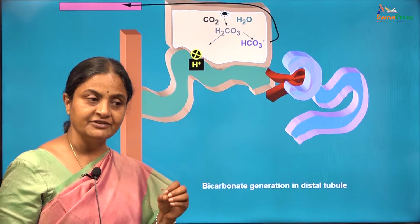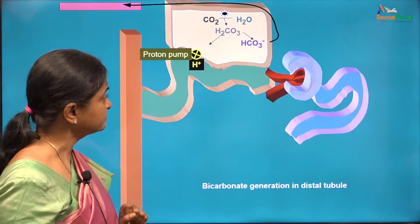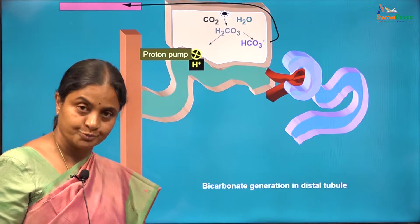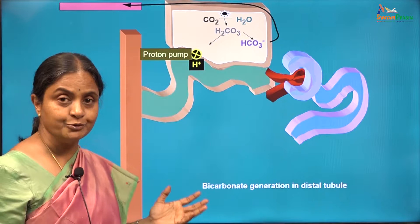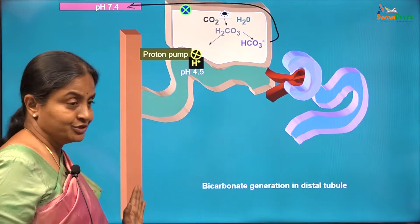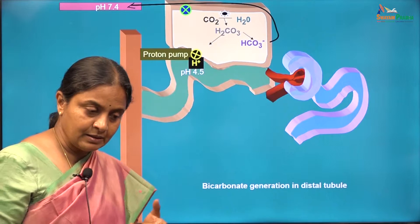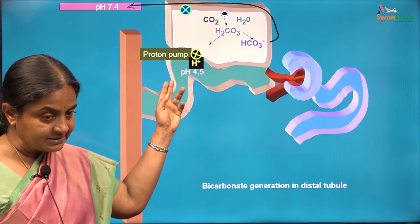The V-type ATPase — V for vesicular — is generally found on all vesicles within cells, but in the distal tubular cell it is found on the plasma membrane as well. This proton pump can push protons against a gradient; even if the luminal fluid becomes acidic, it can continue to push protons. Does that mean all protons can be eliminated just by the proton pump? The pH of urine will be about 4.5 — taking the more extreme scenario for ease of calculations. The pH of urine cannot drop below 4.5, and therefore that is the limit of this proton pump.